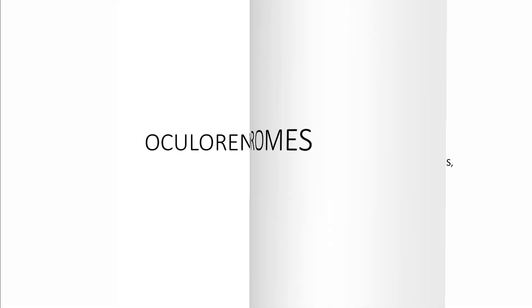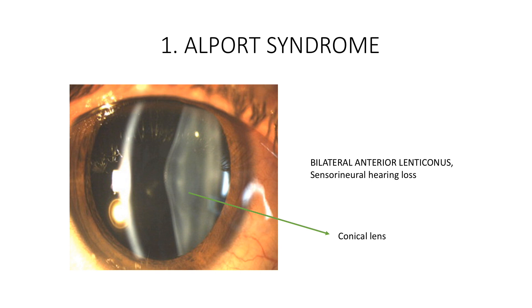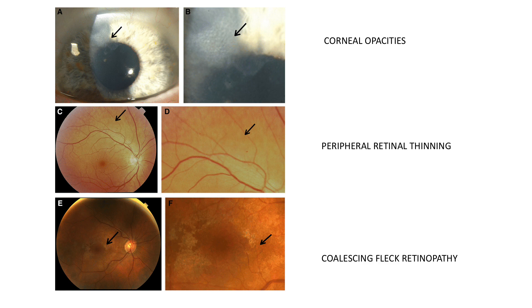What are the oculorenal syndromes? Number one: Alport syndrome. In Alport syndrome the eye lens is affected. You see most of the time a bilateral anterior lenticonus. Normally the lens is disc-shaped or spherical, but in this case you can see there is a conical bending of the lens. The patient also has sensorineural hearing loss. Other features include opacities in the cornea, peripheral retinal thinning, and coalescing fleck retinopathy in the center of the macula.